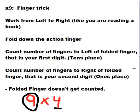So put your fingers straight out in front of you so that you can see them all and we're going to work from left to right like you're reading a book. The action is on the four which means that is going to be the finger that you are going to fold down.